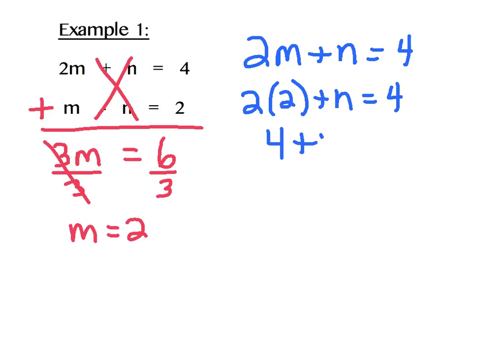4 plus n equals 4. Subtract 4 on both sides, and I get n equals 0. I now know that the solution to my system is 2, 0. And my next step is going to be to check it in both equations.